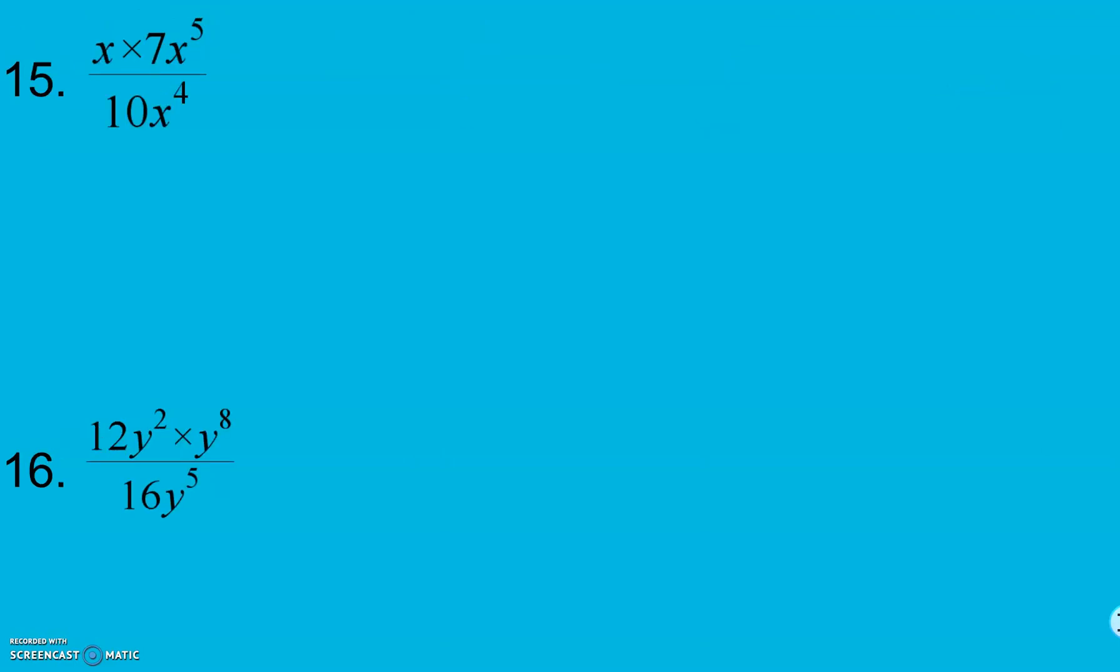Give 15 a try. Here, I have x times 7 times x to the fifth. Remember, those coefficients are just their own factors. Over 10 times x to the fourth. So, my numerator is not as simple as I can get it. I can combine these x terms into 1.